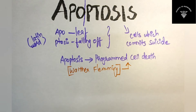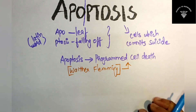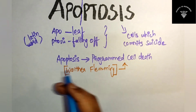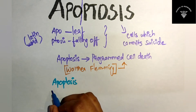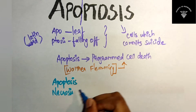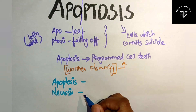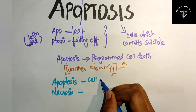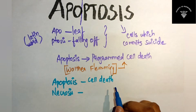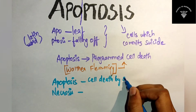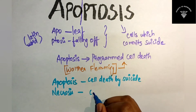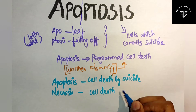Next, you have to know the difference between apoptosis and necrosis. Both are cell death. Apoptosis is cell death by suicide, and necrosis is cell death by injury.